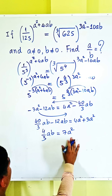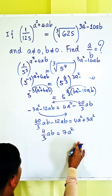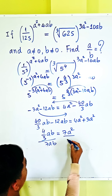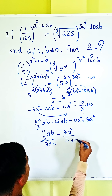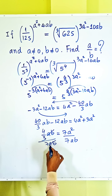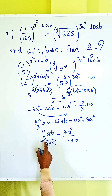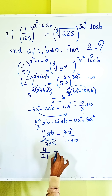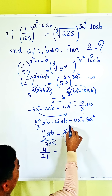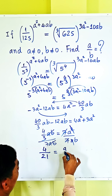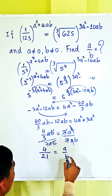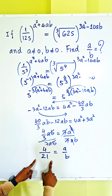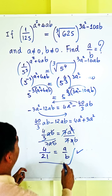We divide both sides by 7ab to simplify. The a terms and b terms cancel appropriately, giving us a divided by b equals 4 divided by 21. So a/b = 4/21 is our answer.